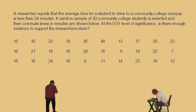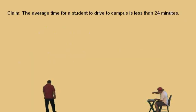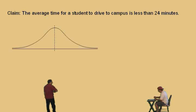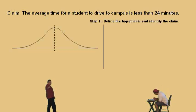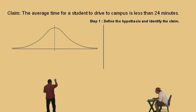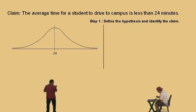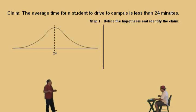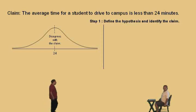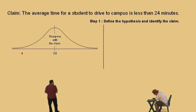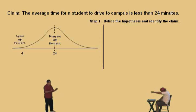The first thing we're going to do, Charlie, is define what the claim is. What is it? It takes a student less than 24 minutes to drive to campus. That's right, less than 24 minutes. We're going to assume we have a normal bell-shaped distribution and start with step one: find the hypothesis and identify the claim. We're going to use 24 for our population mean, mu. Now suppose our sample mean came out to be 24 — that would disagree, because the claim says it should be less than 24. Suppose x-bar came out to be 4 — that would agree, because that is less than 24.